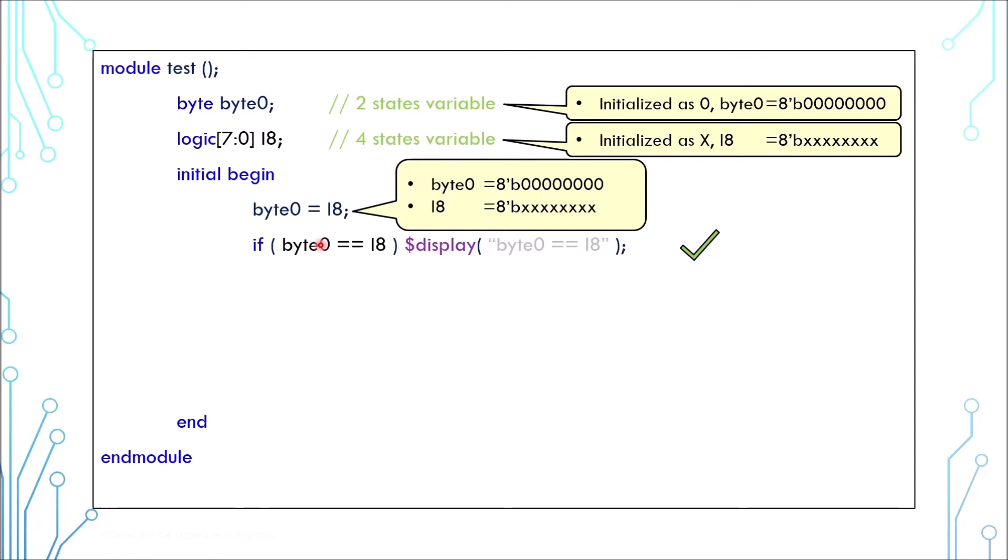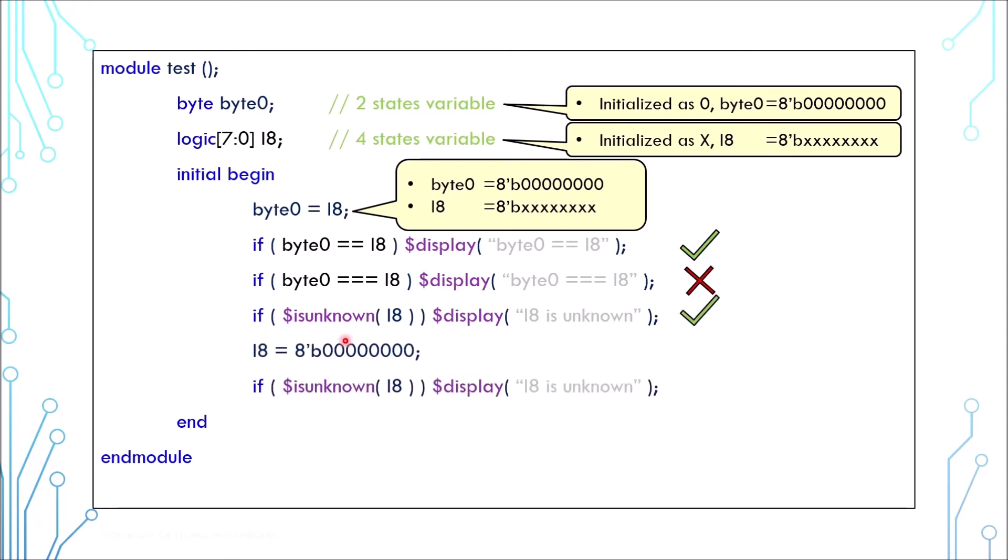If you want to compare all four states, you need to use triple equals. In this case, the comparison will return false. You can check if a variable has unknown values by using the system function $isunknown. This function will return true because the logic is X. After assigning the logic to zero, the system function will return false.